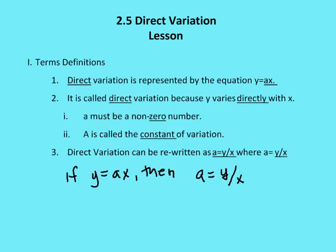What is direct variation? Direct variation says that when you have two variables, y and x, they vary directly with each other. As one changes, the other changes proportionally. We say it's called direct variation because y varies directly with x, or x varies directly with y.